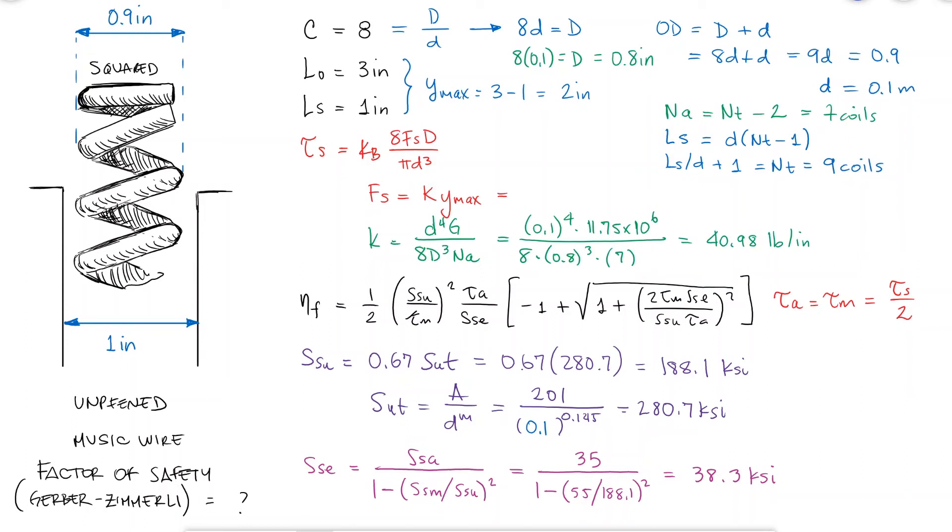With the spring constant value, the maximum force or the force to the solid length, and the correction factor kb, we find the maximum shearing stress. With this value, and therefore the value for the alternating and the mean shearing stresses, we find that the factor of safety is 0.38.